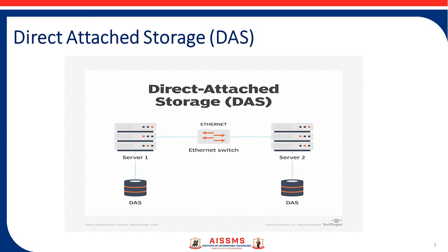Direct Attached Storage comes in two types: internal Direct Attached Storage and external Direct Attached Storage. Internal Direct Attached Storage has storage devices initially connected to the host; the connection between the host and storage device is a serial or parallel bus. External Direct Attached Storage is a server connected directly to external storage devices.